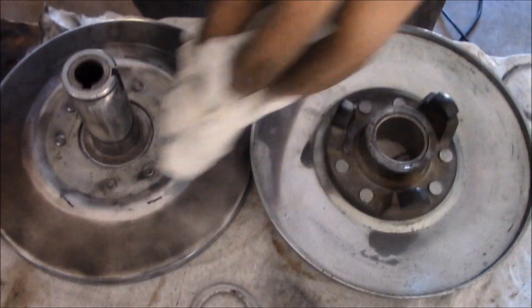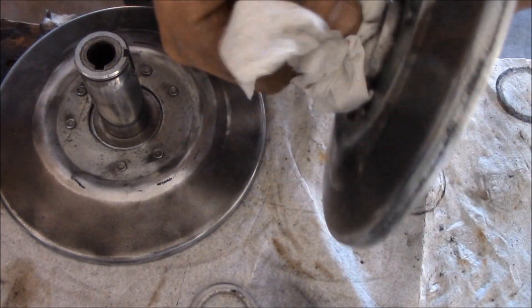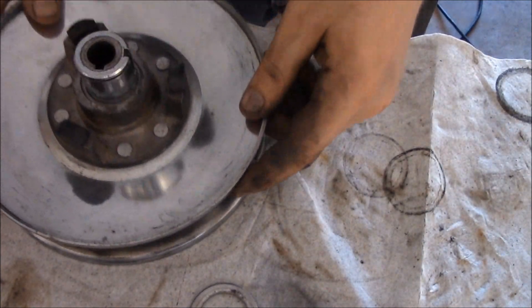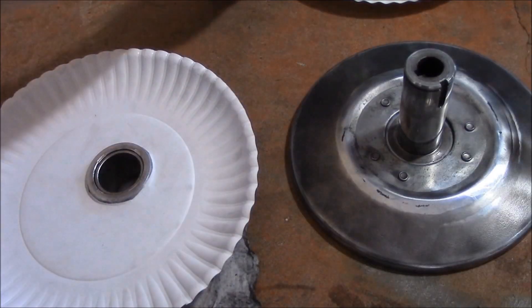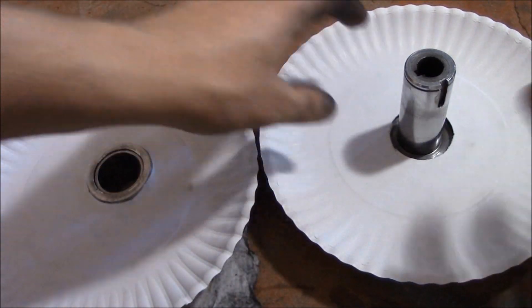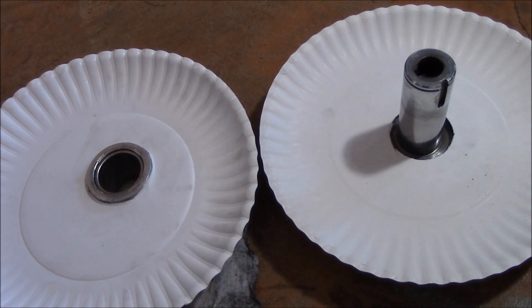One thing I didn't show you in the drive unit is I'm spraying carb cleaner or brake cleaner on the parts that are going to receive the dry moly lubrication. Paper plates, again, with dry moly, it goes on wet.